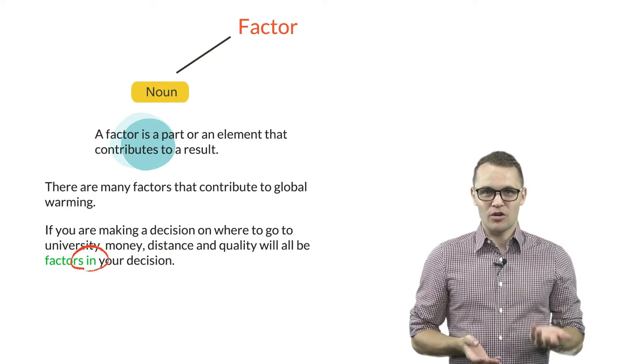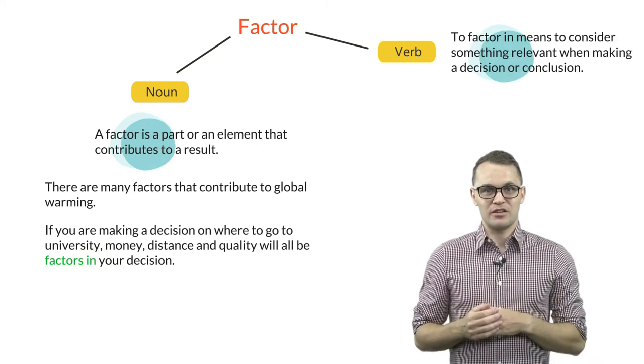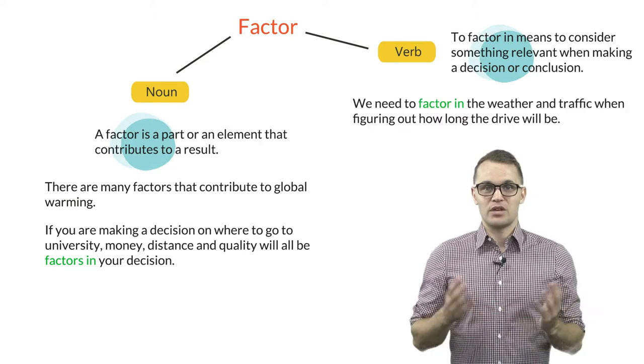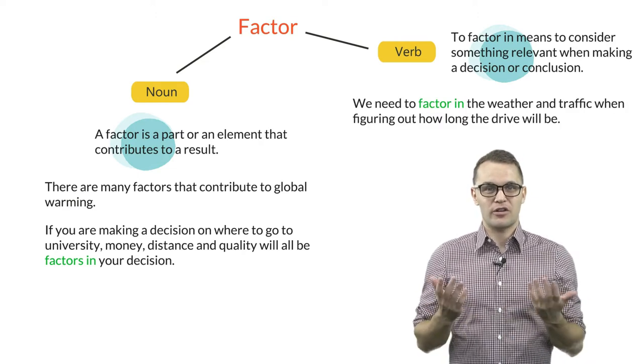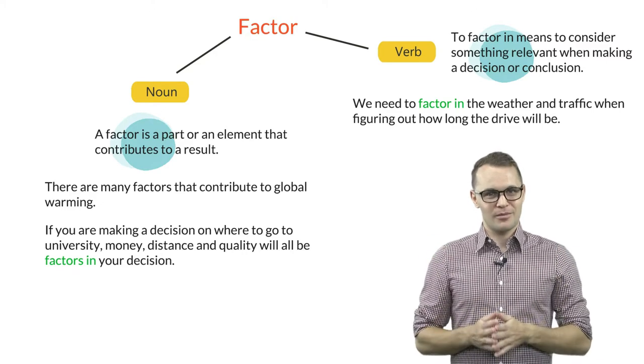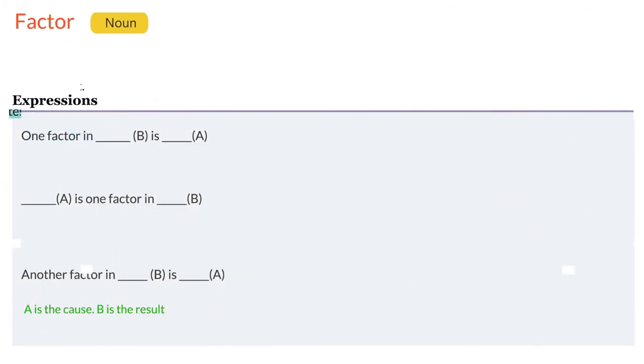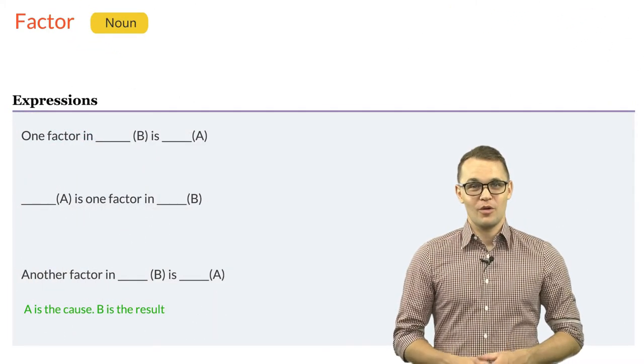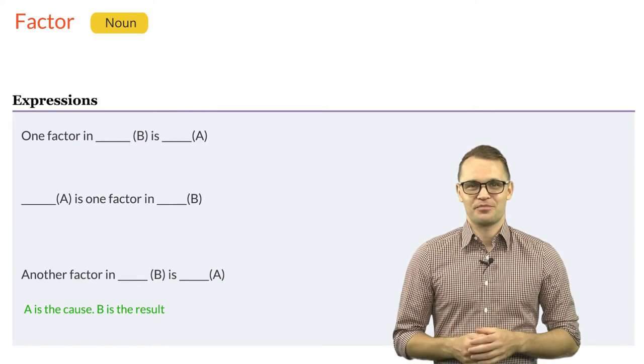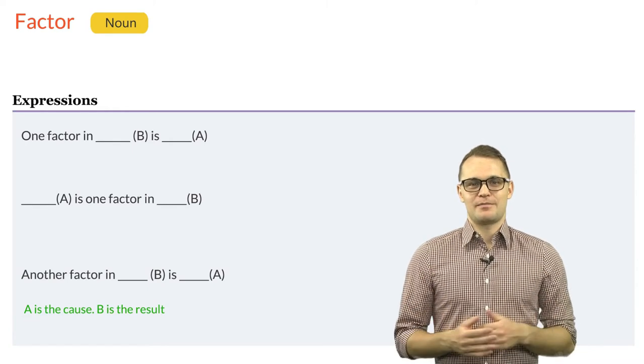The word factor can also be used as a verb. To factor in means to consider something relevant when making a decision or conclusion. For example, we need to factor in the weather and traffic when figuring out how long the drive will be. Now, let's see three common patterns and expressions used with the word factor. One factor in B is A. Or A is one factor in B. Another factor in B is A. Let's look at some example sentences.